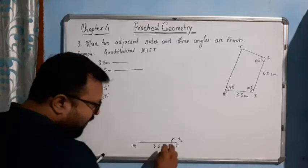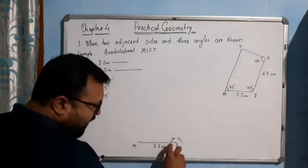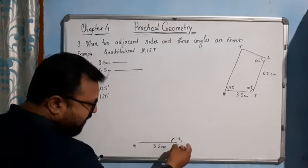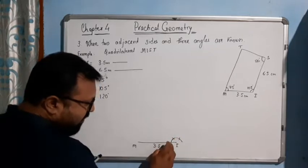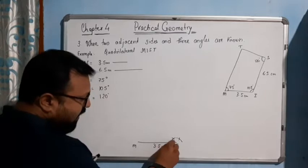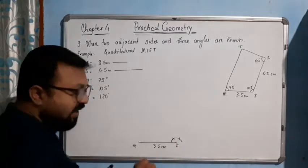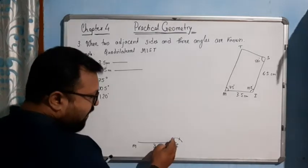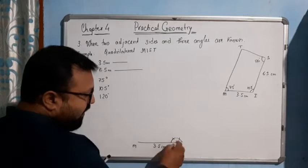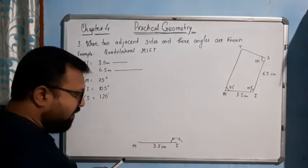Place the pin at point I and draw this arc, then place the pin at the arc point and put one arc mark. If you join this line, it will create 60 degrees. Here again put one more arc — another 60 degrees. So 60 plus 60 gives you 120 degrees.